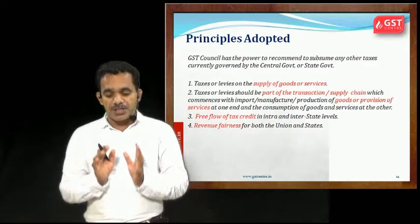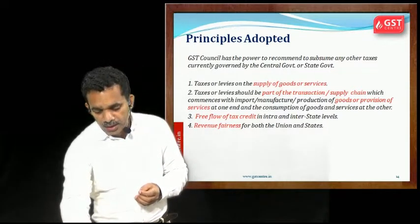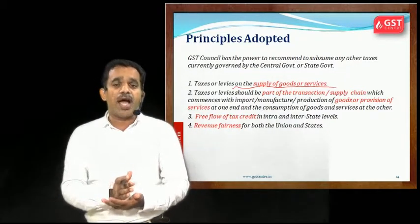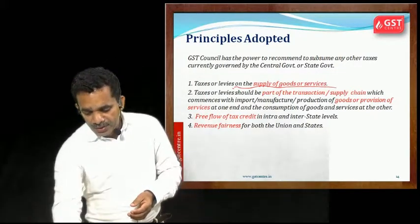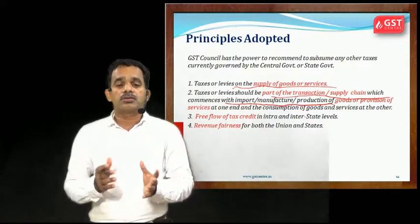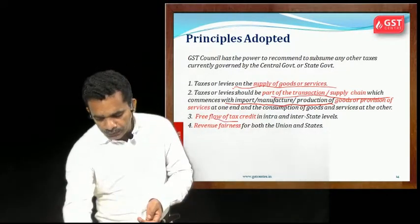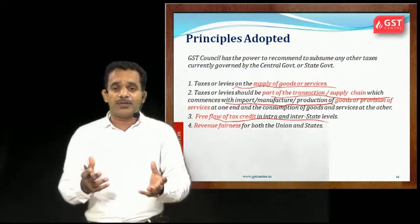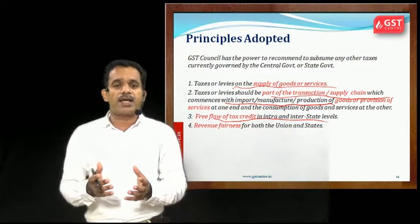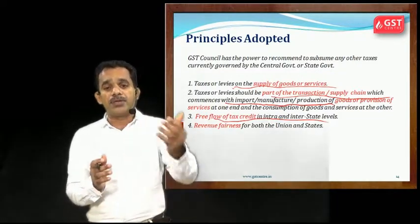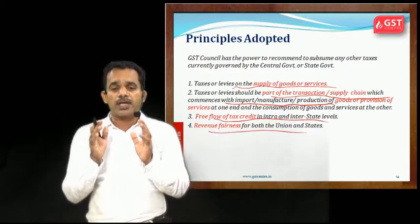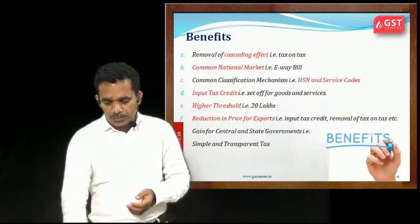The principles adopted on implementation of GST are: it is levied on supply of goods and services, not on individuals or corporates; the tax levy should be part of the transaction or supply chain related to import, manufacture, or production; free flow of tax credit — a registered person can claim input tax credit from suppliers; and revenue fairness for both central and state governments, meaning both should benefit from GST.